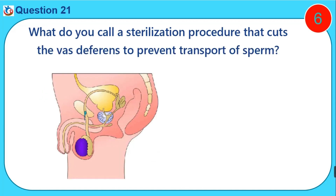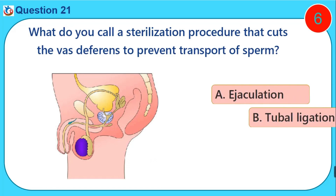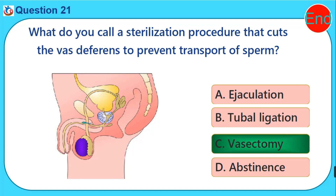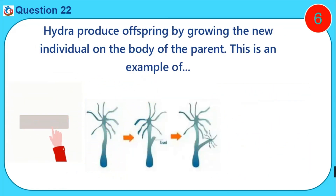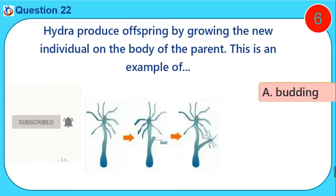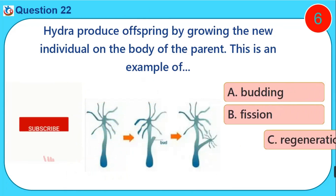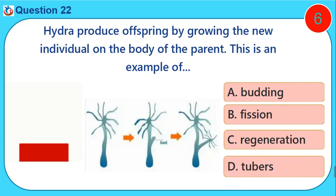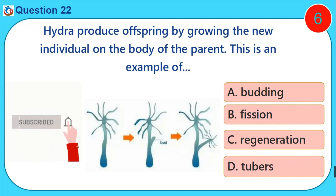What do you call a sterilization procedure that cuts the vas deferens to prevent transport of sperm? A. Ejaculation. B. Tubal ligation. C. Vasectomy. D. Abstinence.